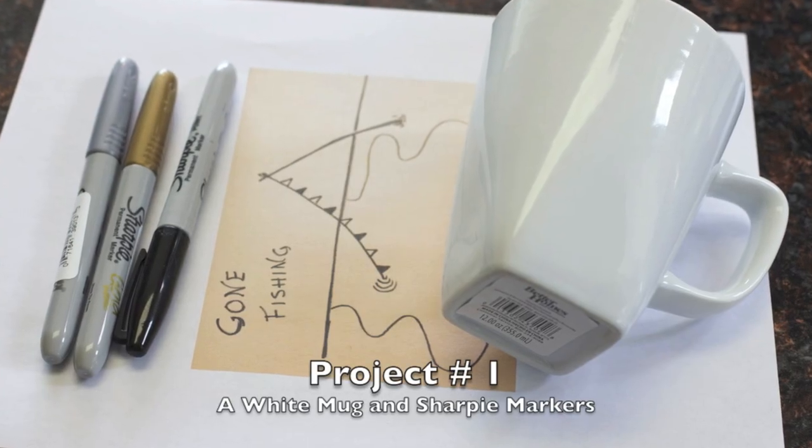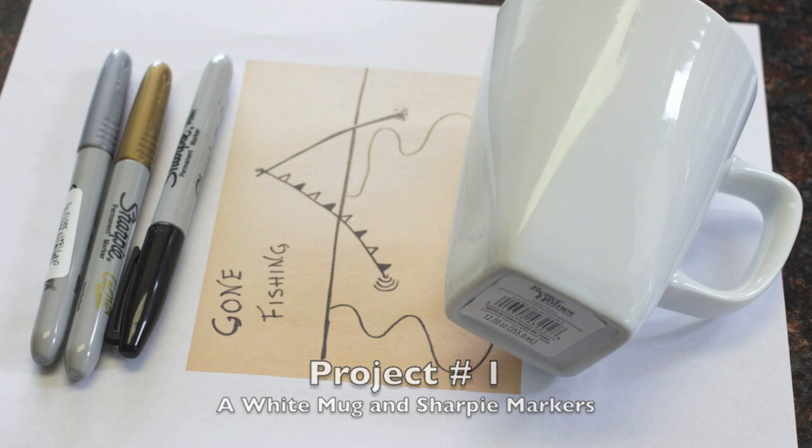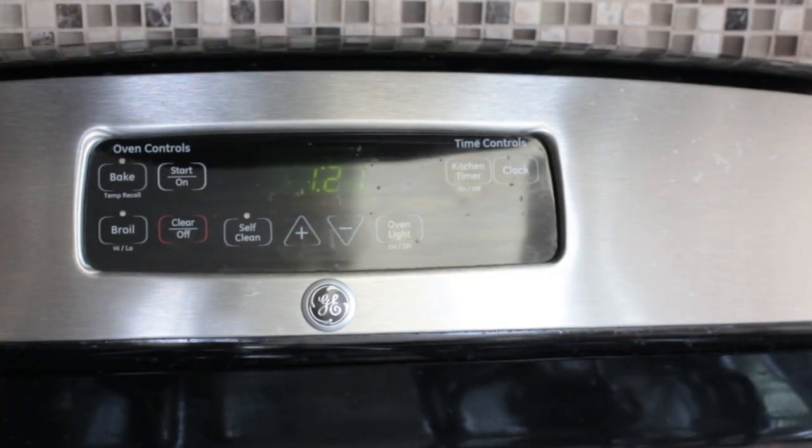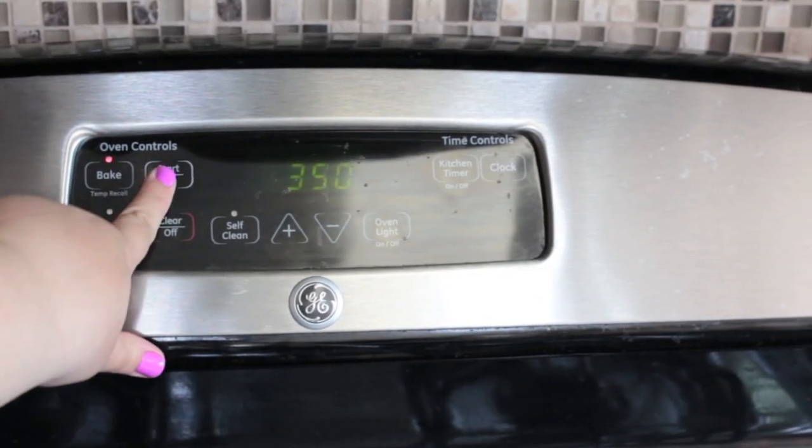For the first project, you'll need a plain white mug and some Sharpie markers. First, start out by preheating your oven to 350 degrees Fahrenheit.